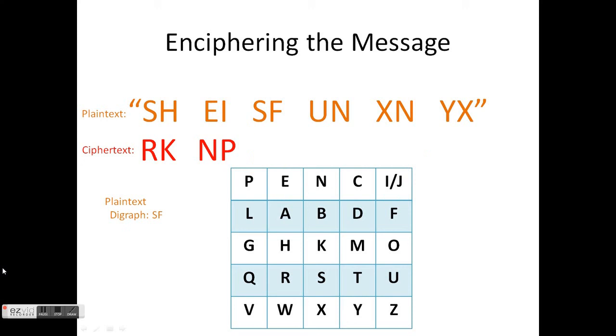Next, we have the plaintext digraph SF. Highlight S and highlight F. They are not in the same row or column, so draw a box around them. S will become U, and F will become B. So SF becomes UB.